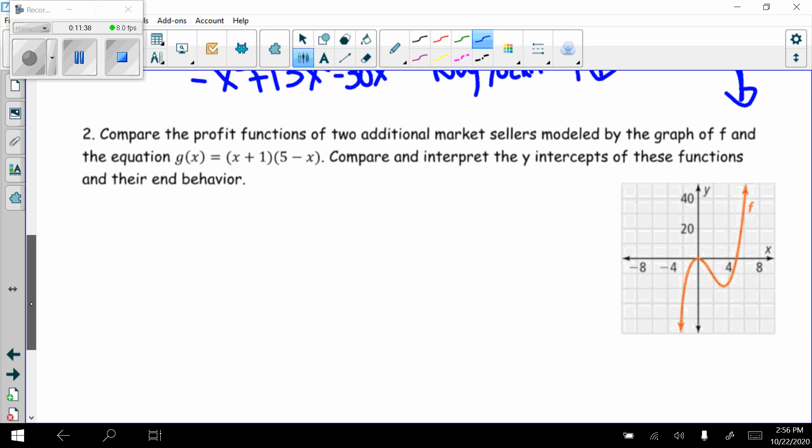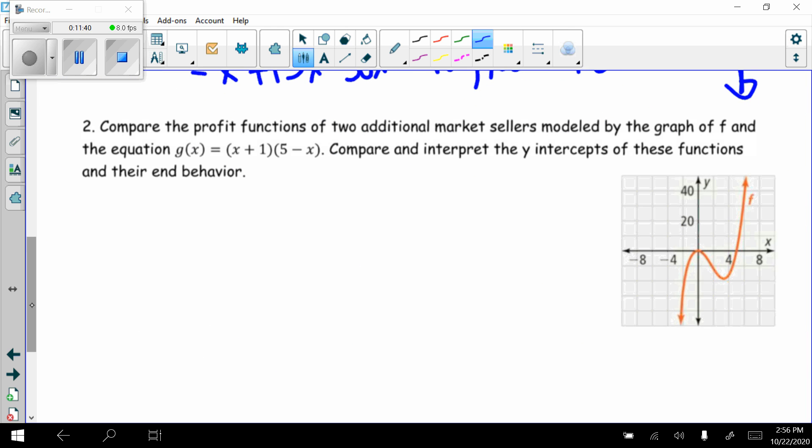Let's do another comparison. Compare the profit functions of two additional market sellers modeled by the graph of f and the equation g(x) = (x + 1)(5 - x). Compare and interpret the y-intercepts of these functions and their end behavior.